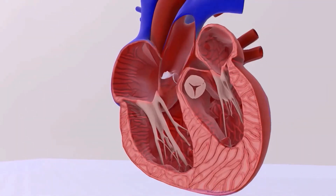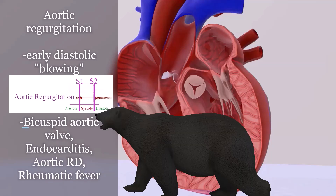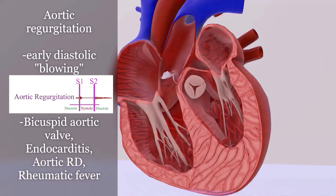In aortic regurgitation, there is weakening of the aortic valve causing backflow, so the murmur is heard during diastole. It's described as an early diastolic decrescendo blowing murmur. Causes can be remembered with the mnemonic BEAR: B for bicuspid aortic valve, E for endocarditis, A for aortic root dilation, and R for rheumatic fever. It can progress to left heart failure.